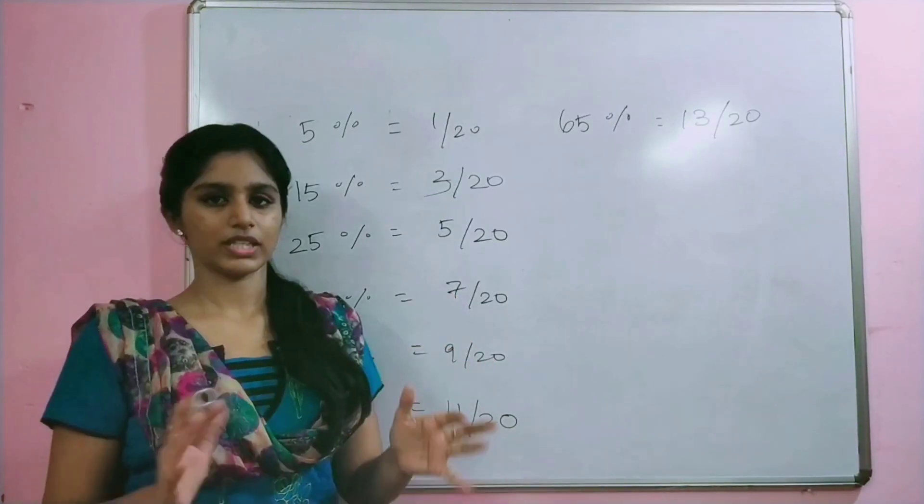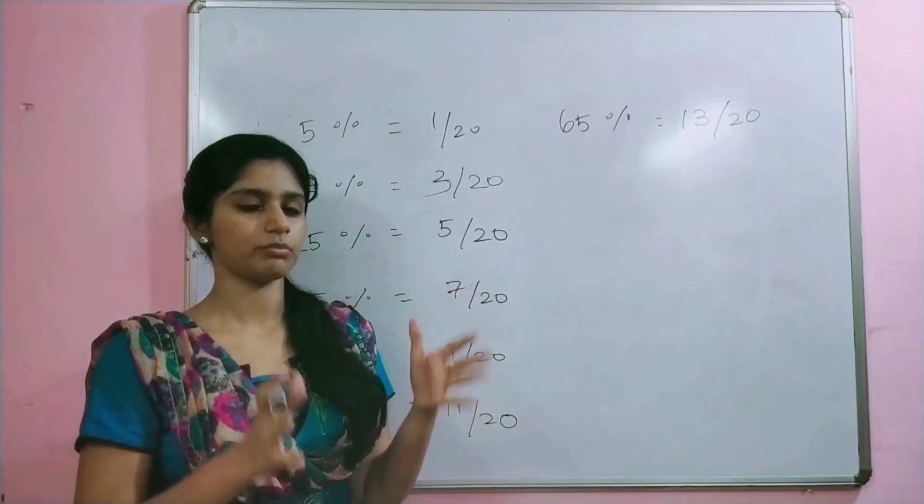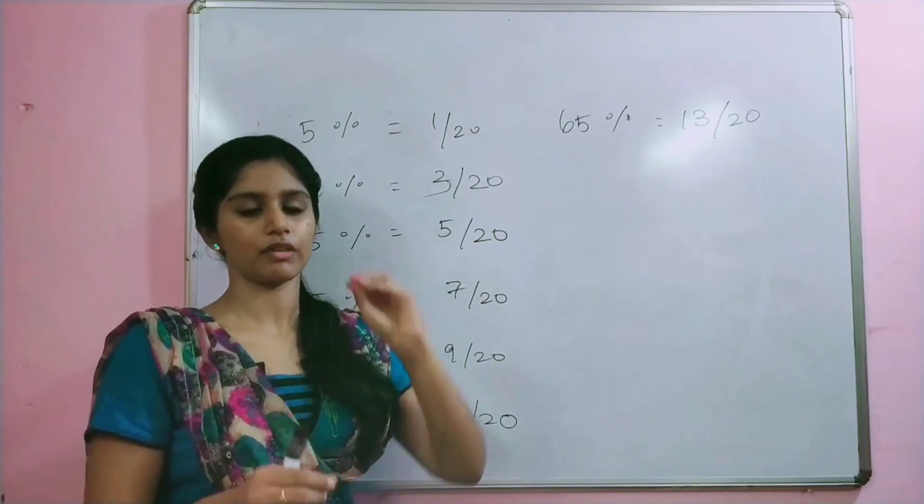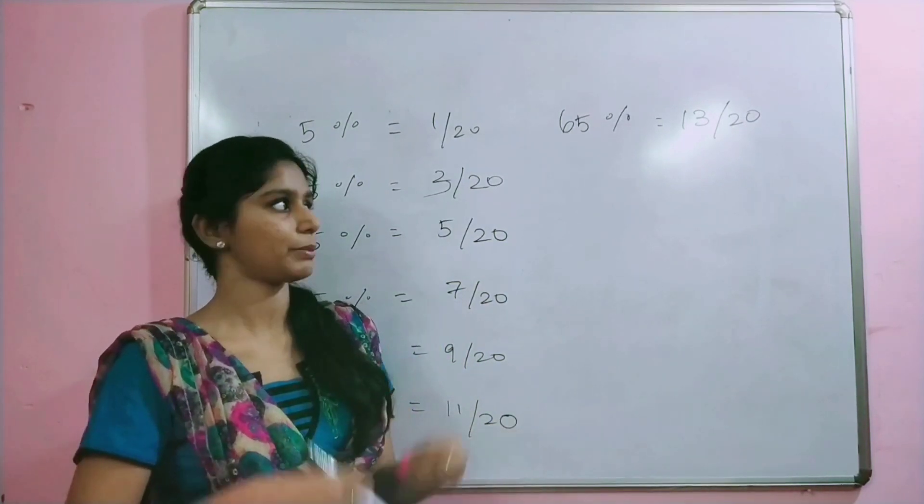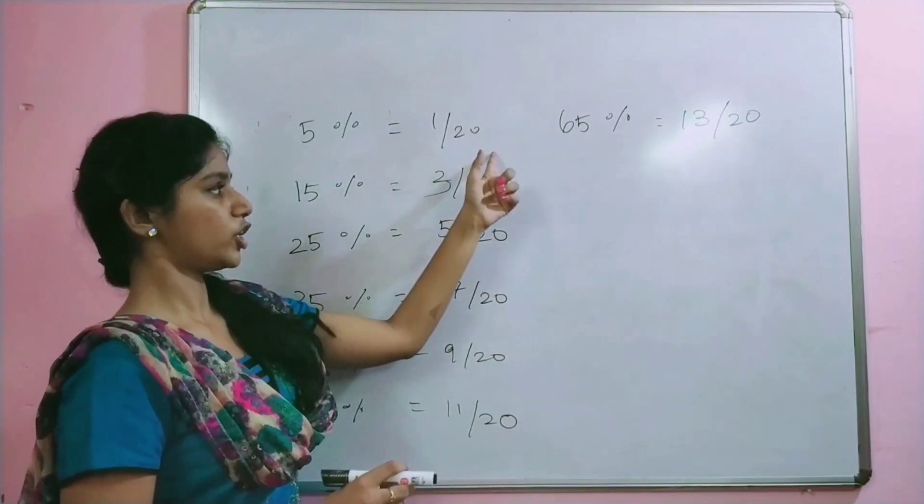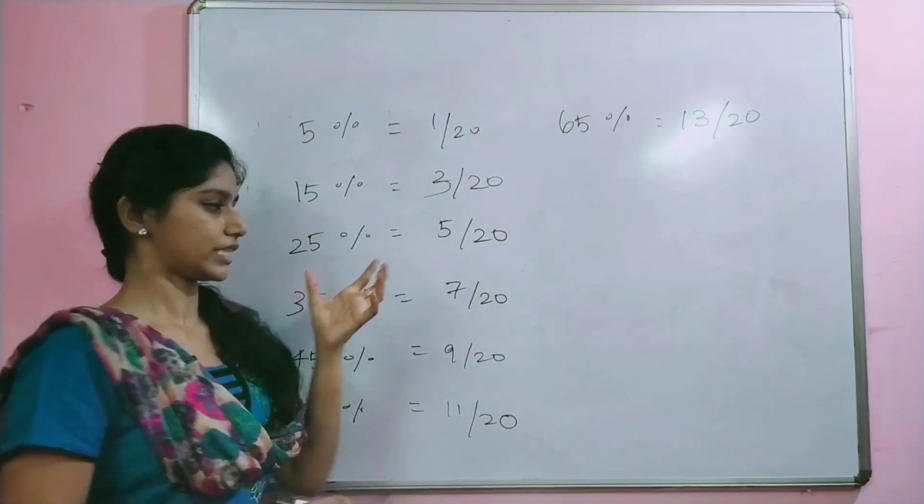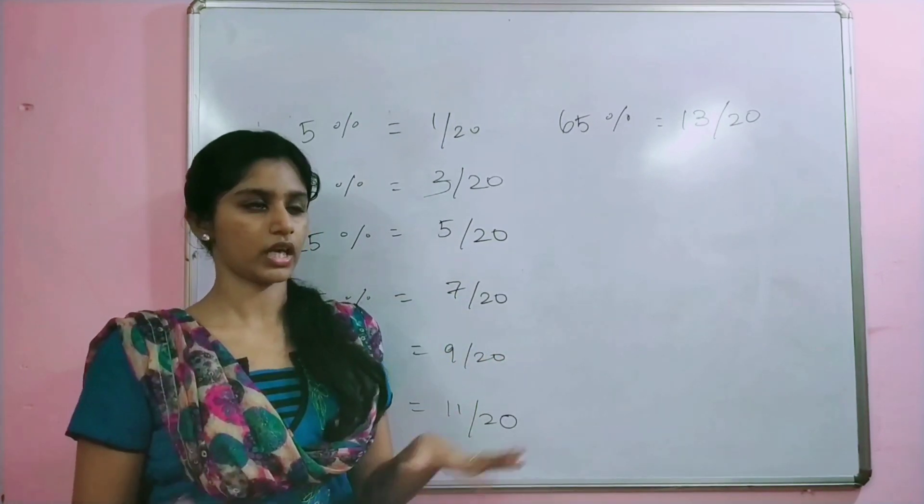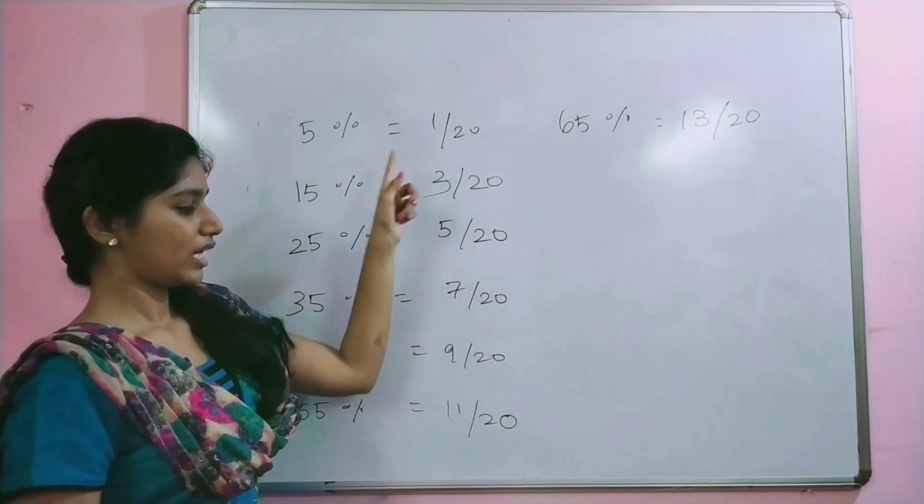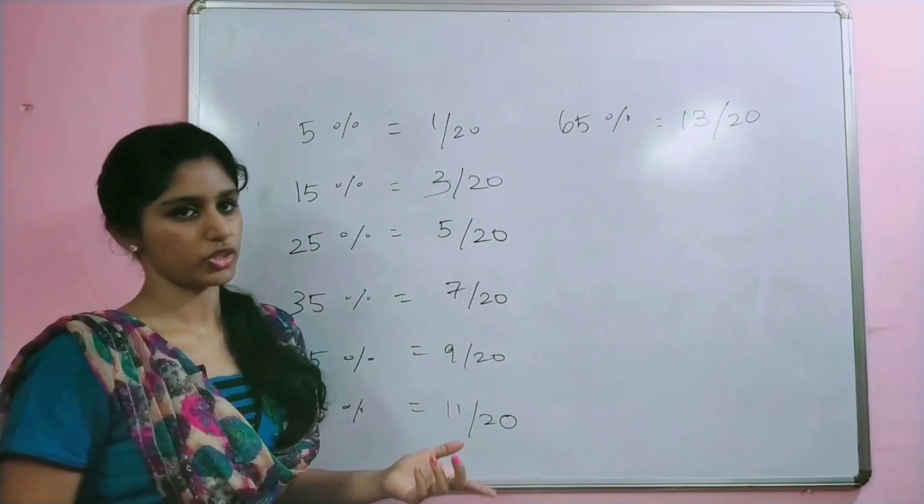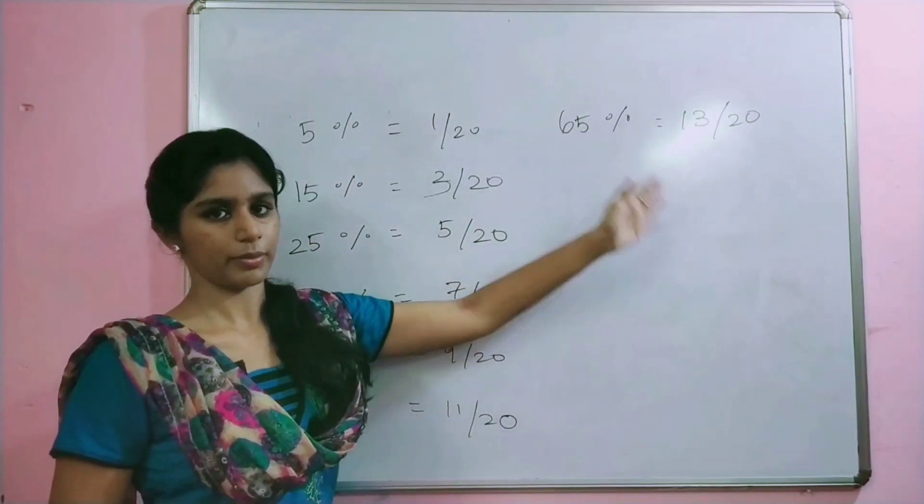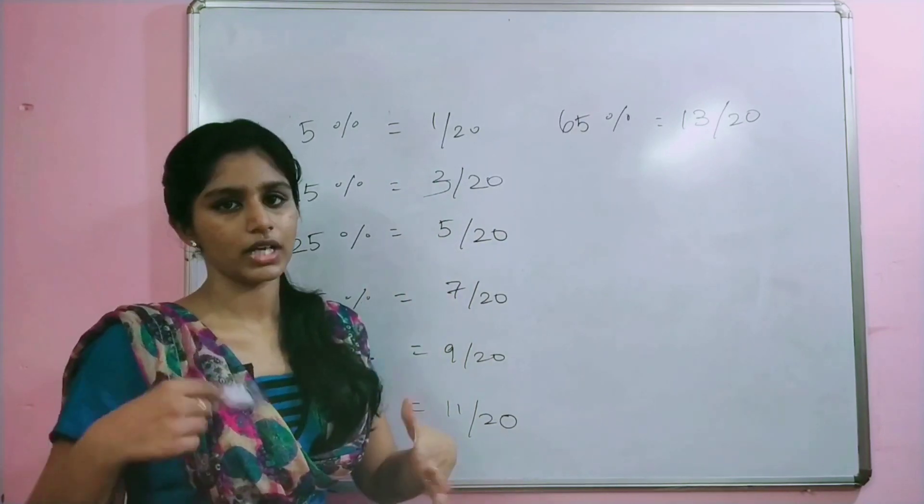Next, we have multiples of 5, the numbers ending with 5. Just make a note of it. What do we do? Denominator, all the numbers should be 20. If you end with 5, the denominator is 20. The numerators will be odd numbers: 1, 3, 5, 7, 9, 11, 13, 15, 17.